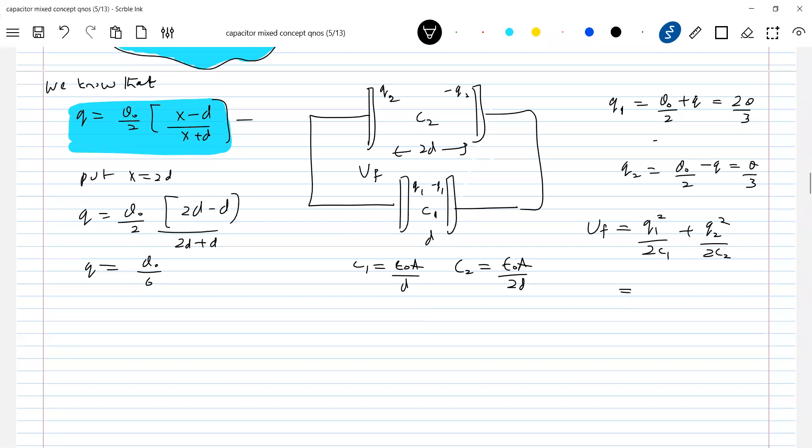Anybody give me the value? Initial energy should be equal to Q0 by 2 whole square by 2C0. So the value will be Q0 square D by 4 epsilon 0 A. This will be Q0 square D by 3A epsilon 0. This is the final potential energy. This is the initial potential energy.